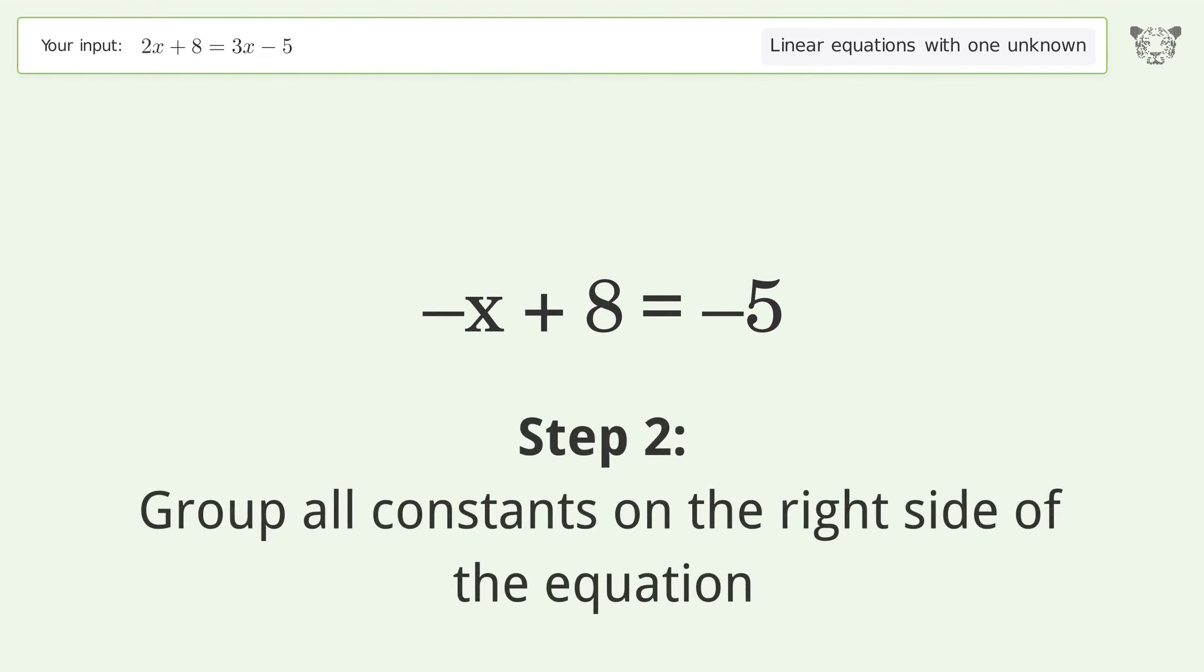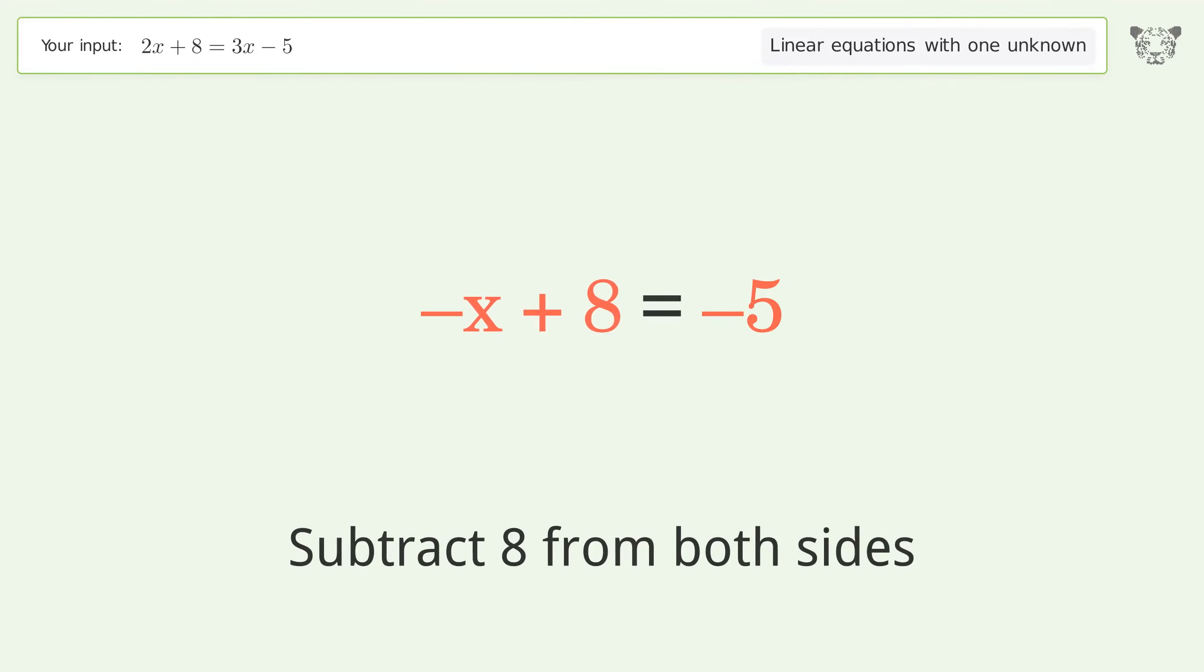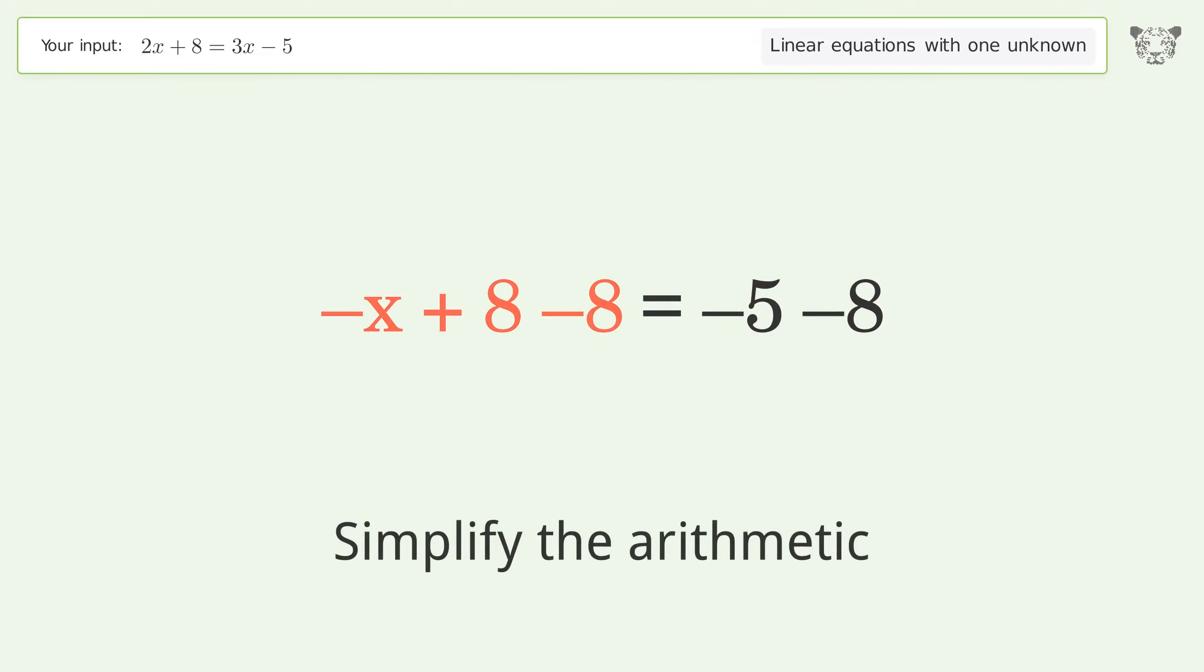Group all constants on the right side of the equation. Subtract 8 from both sides. Simplify the arithmetic.